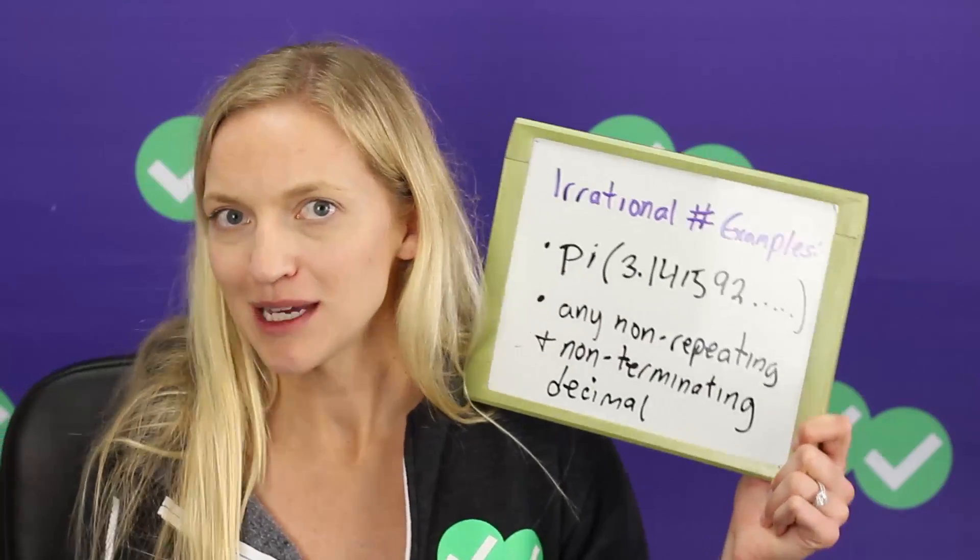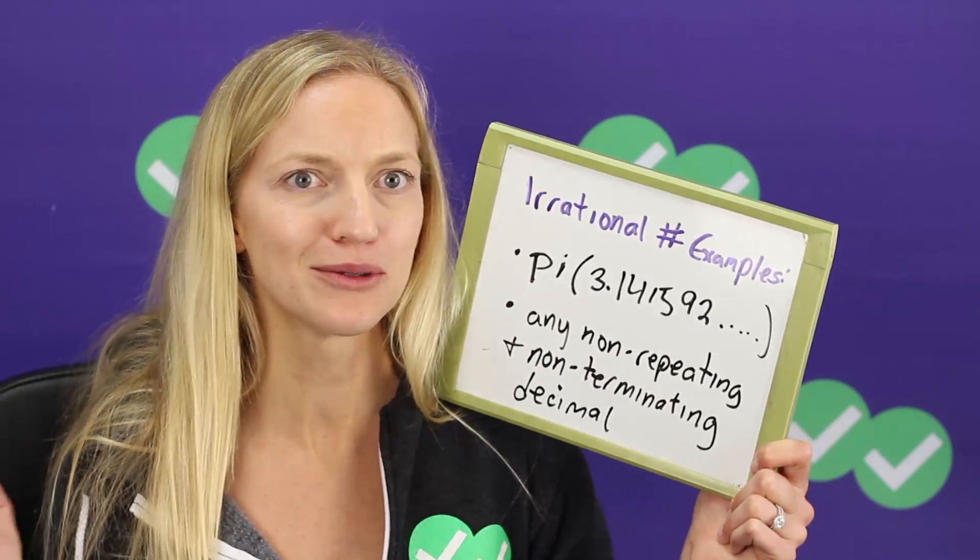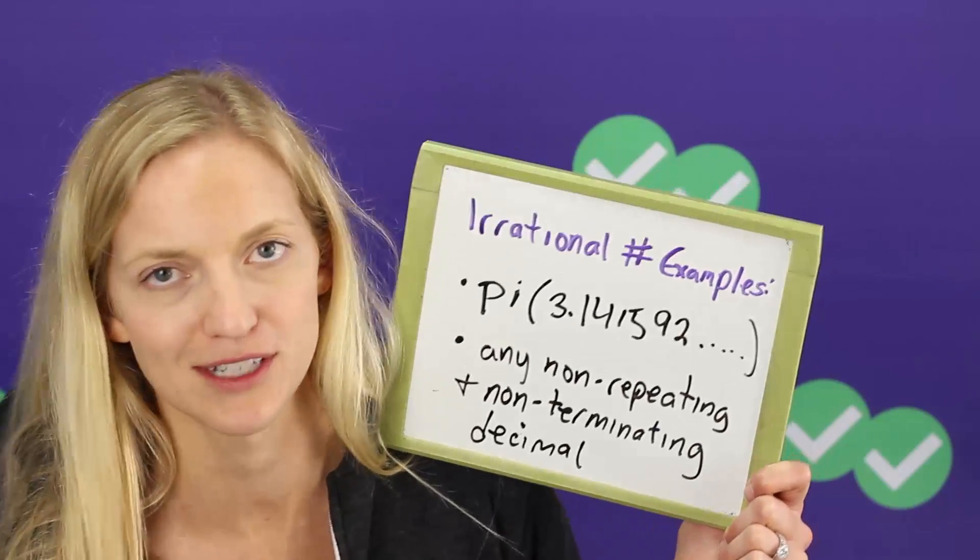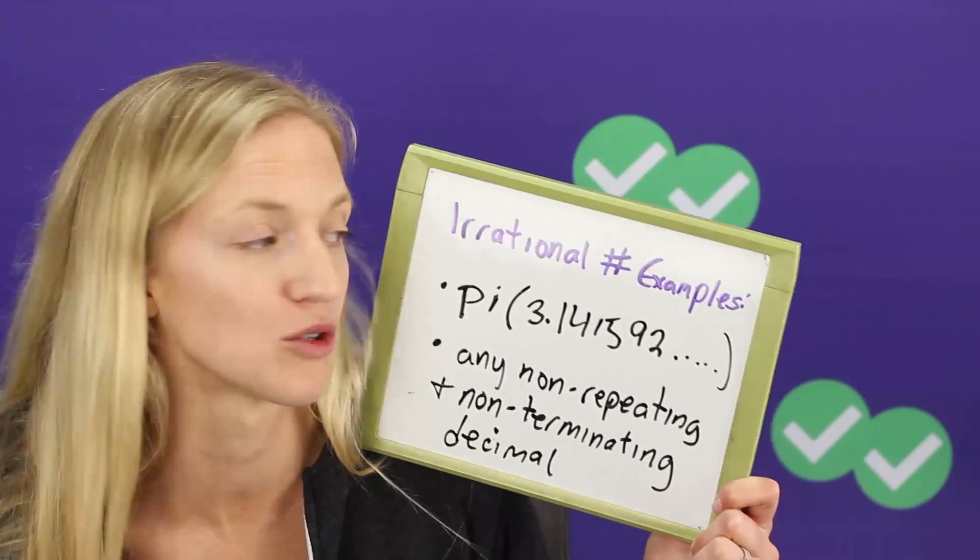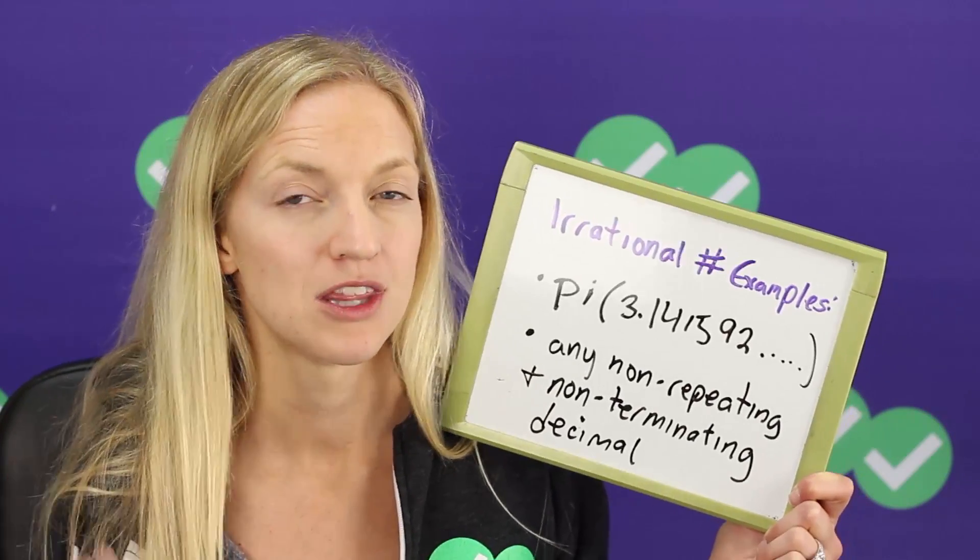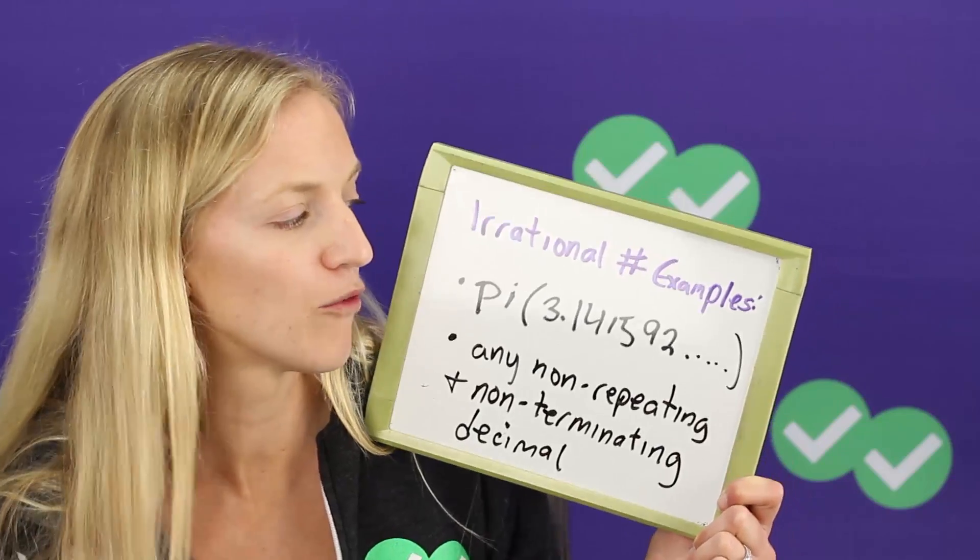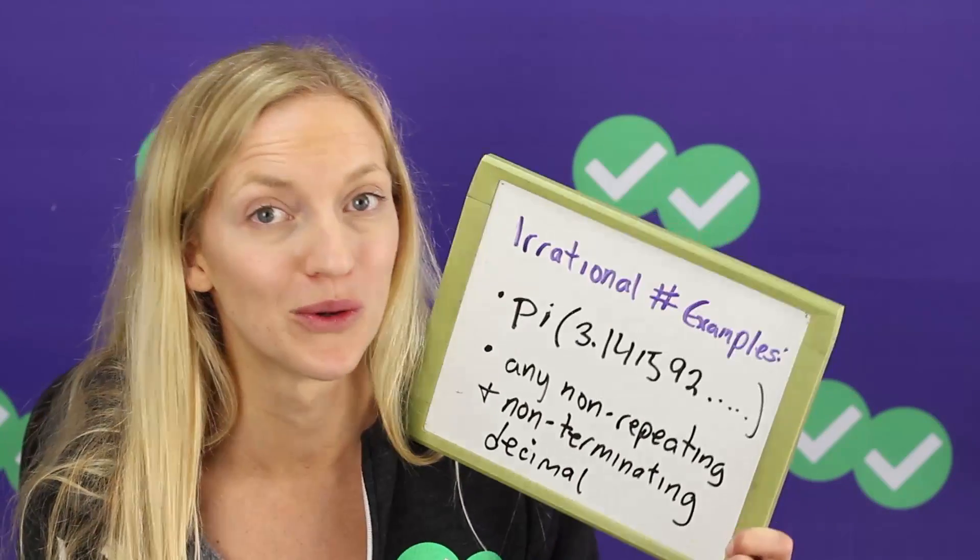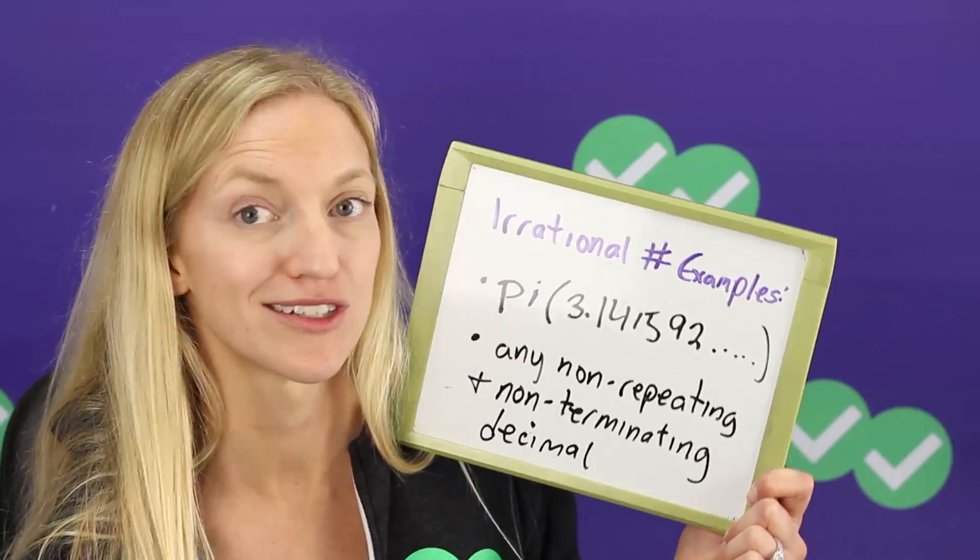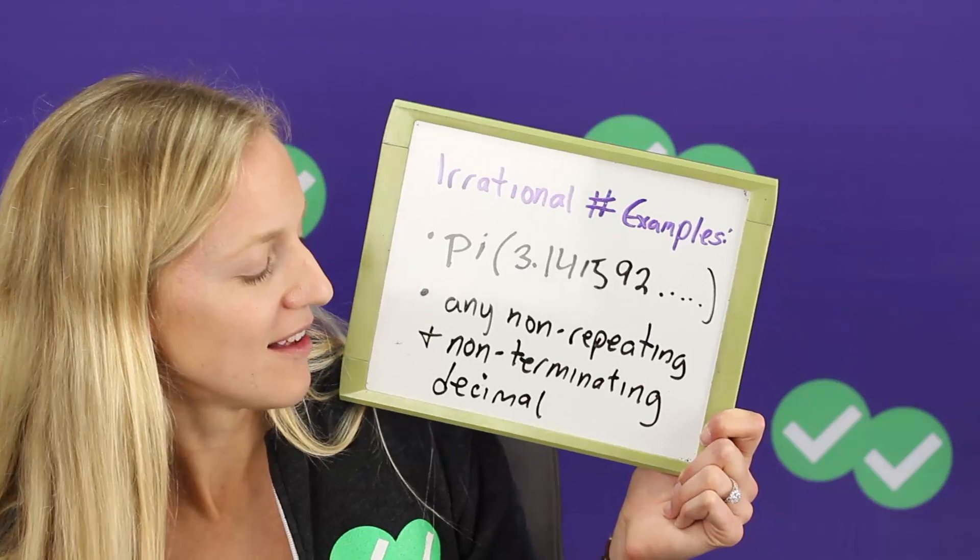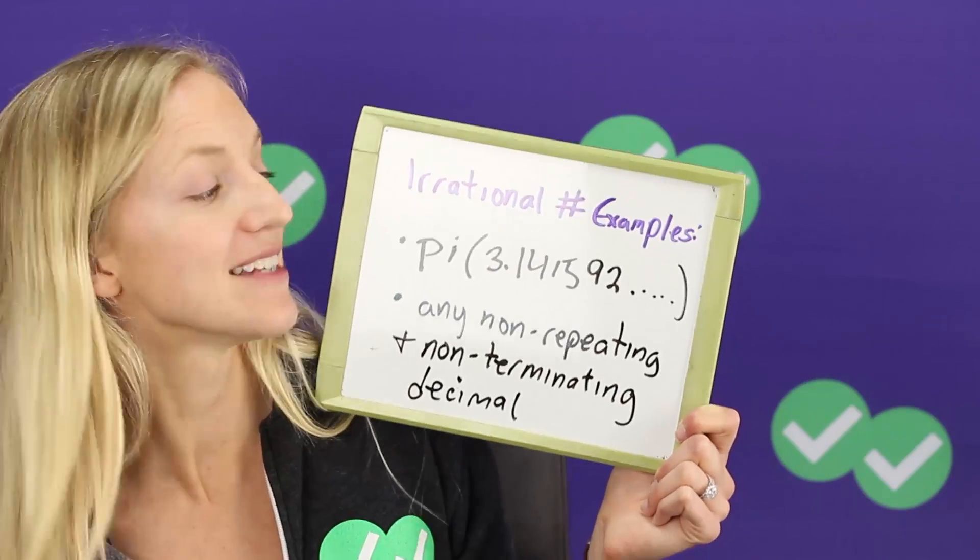The most famous irrational number is probably pi. Some of you maybe have some really cool or really nerdy depending how you look at it, friends who can recite like a hundred digits of pi or maybe there's a contest in your school. Pi just keeps going and it doesn't repeat. So that's why it's such a feat to be able to memorize this string of numbers. So it's 3.141592 and then so many other numbers and we haven't gotten to the end of pi yet. There are still mathematicians working on that. So any non-repeating and non-terminating decimal like pi is irrational.